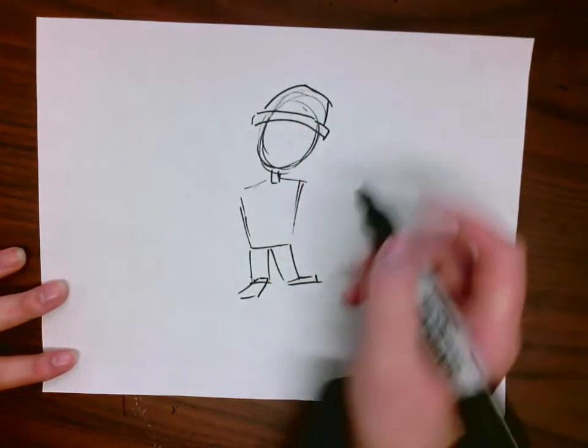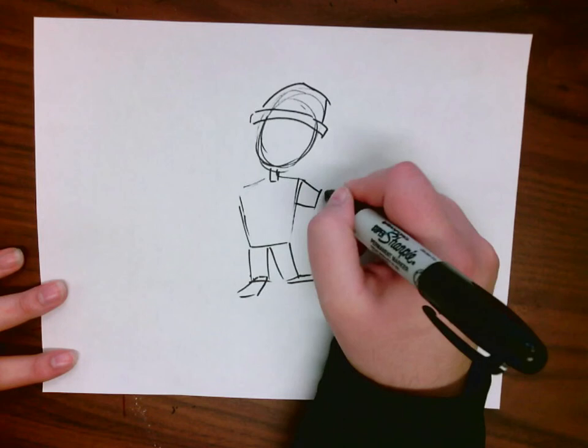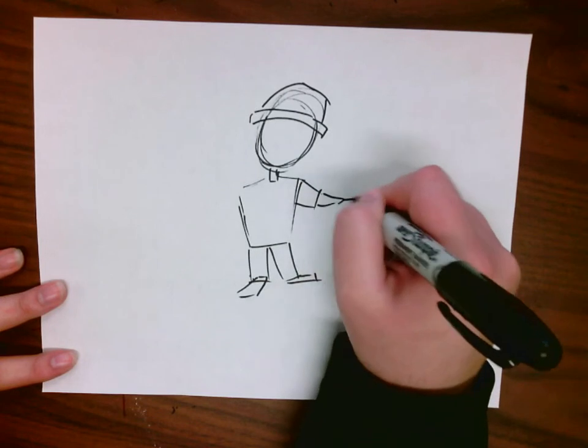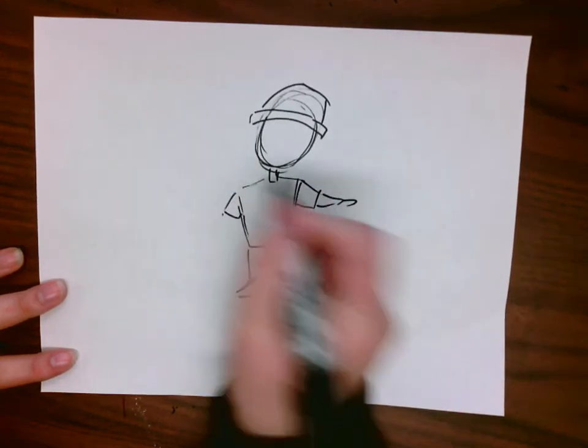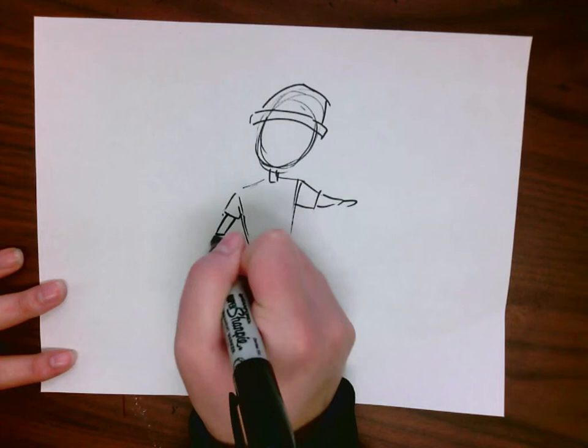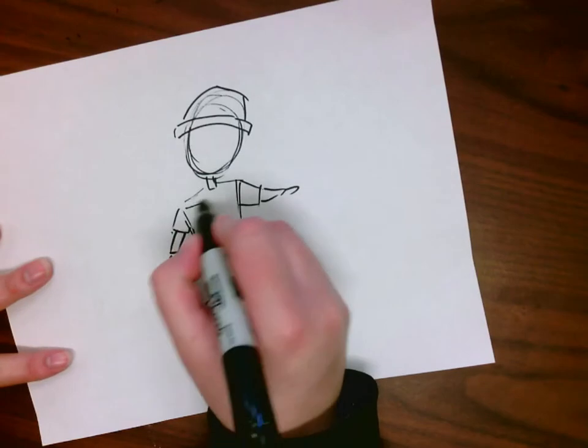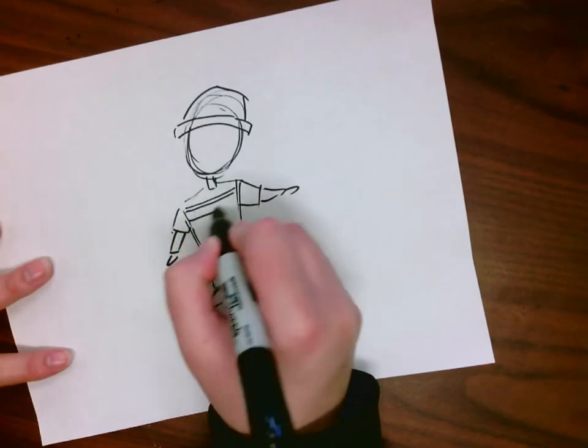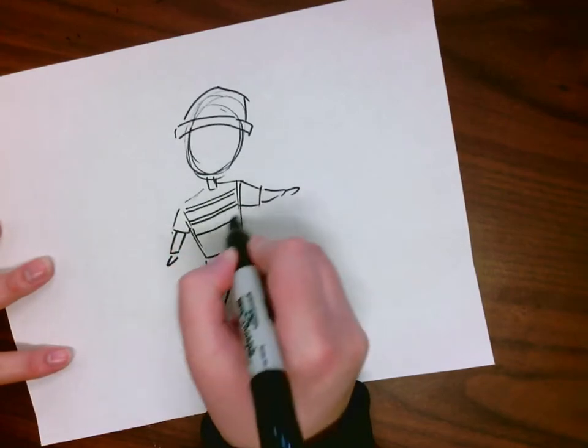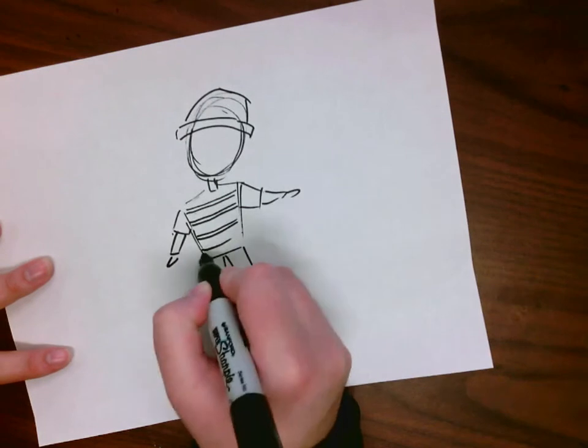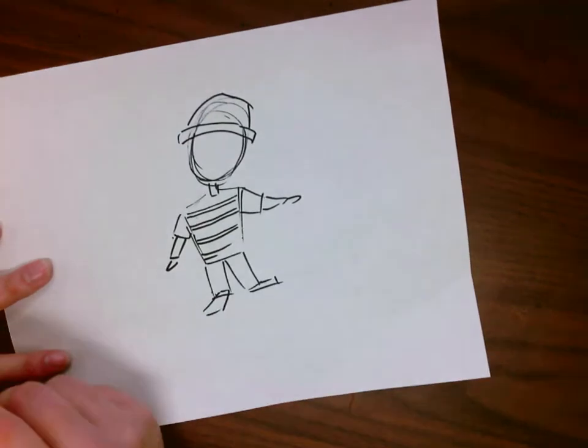So one of the things about a cartoon character is typically they can be recognized really quickly. So you need to think about something that really makes them stick out. So is it the fact that they're wearing a striped shirt? They always wear a striped shirt. Or is it the fact that they're always wearing a hat? Or they're always wearing an apron because they're an art teacher? What is it?